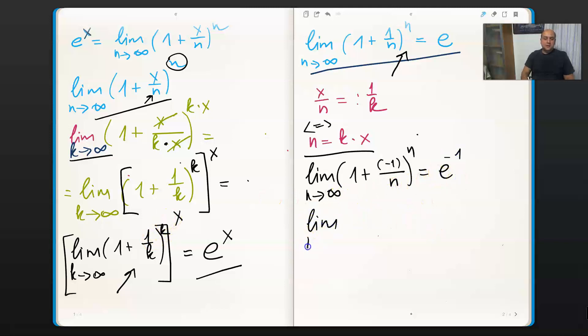What about limit n towards infinity of 1 minus 1 divided by n squared to the power of n? Well, you can see this is the binomial formula that we're dealing here with. We can rewrite that as 1 minus 1 divided by n times 1 plus 1 divided by n to the power of n.